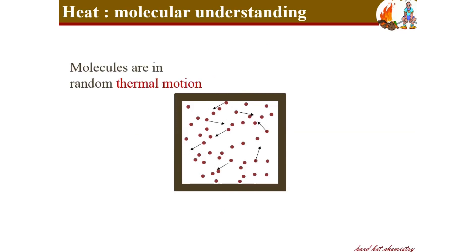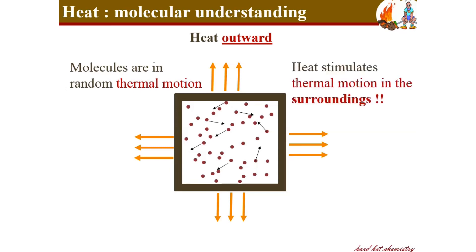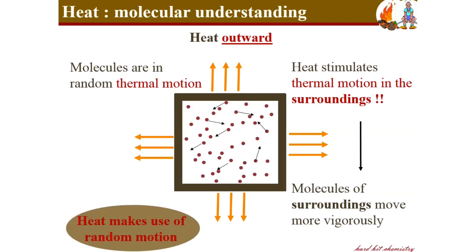On the other hand, when heat is liberated out to the surroundings, the thermal motion of the molecules in the surroundings is stimulated — the surroundings molecules move more vigorously than before because they obtain heat from the system. We can conclude that heat is a property that makes use of the random thermal motion of molecules.